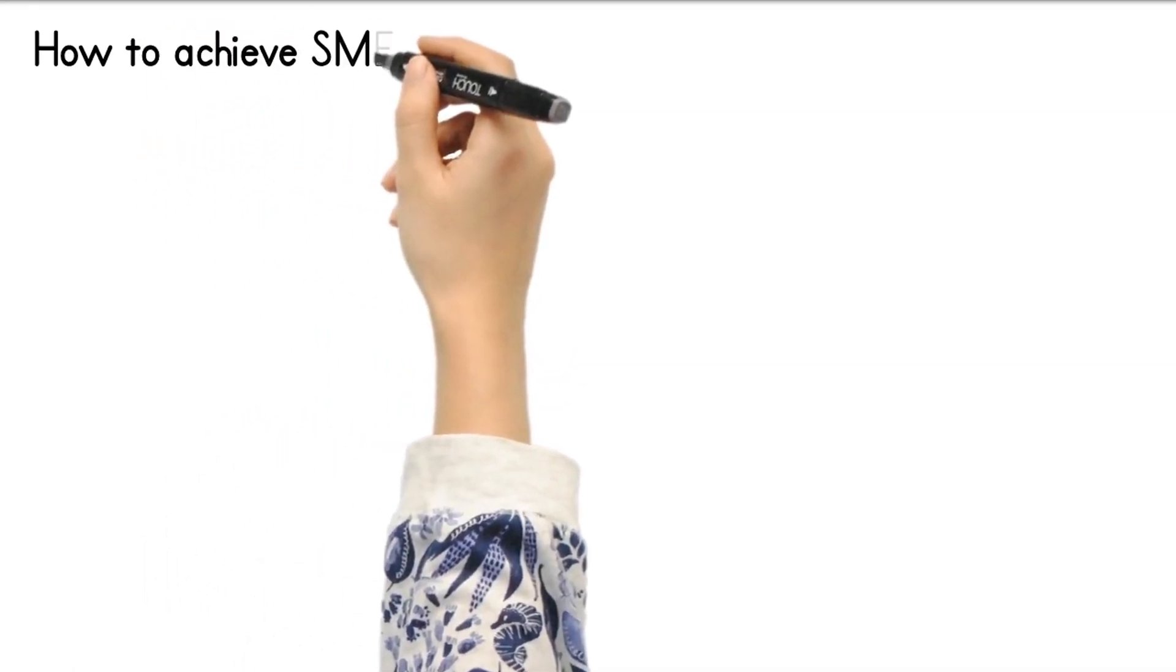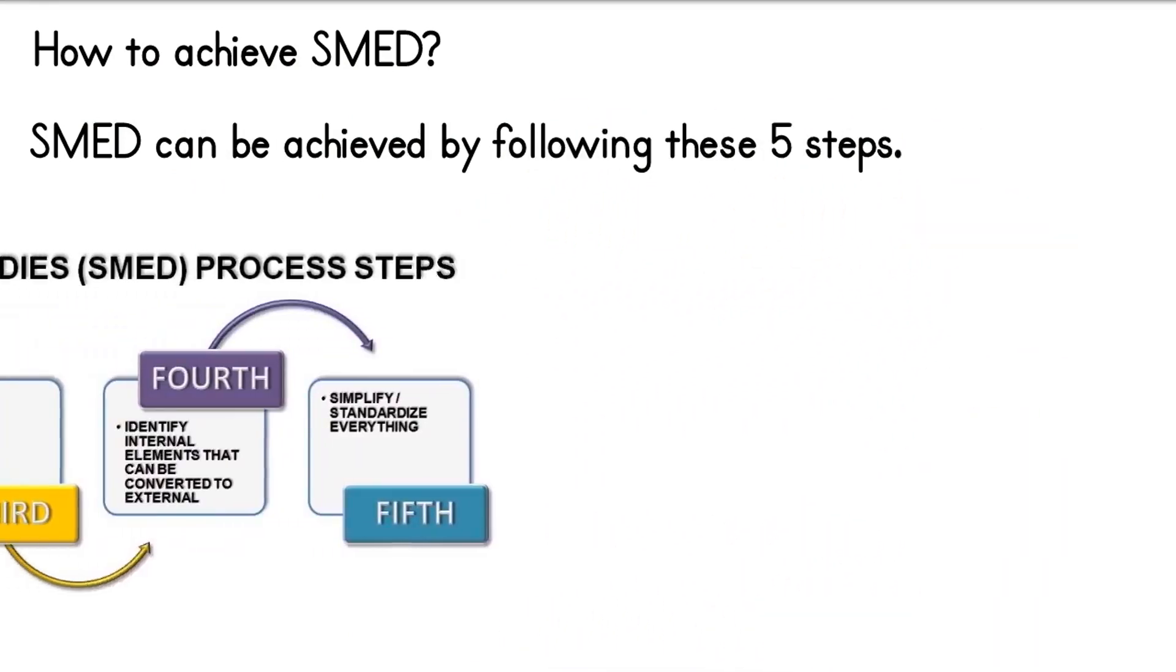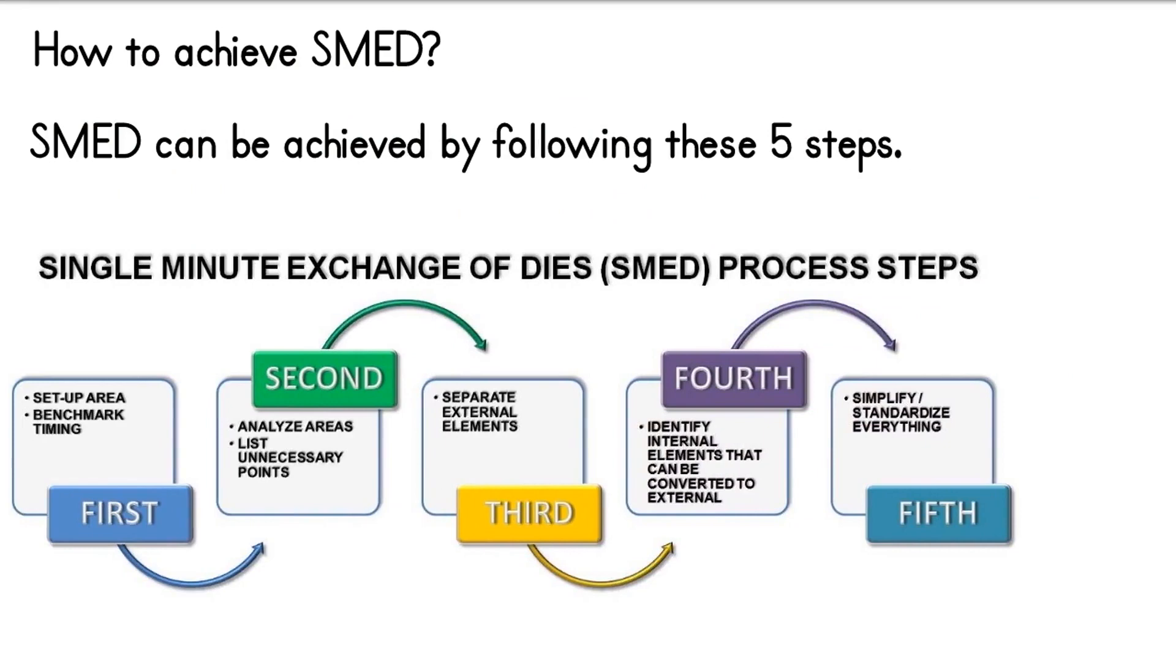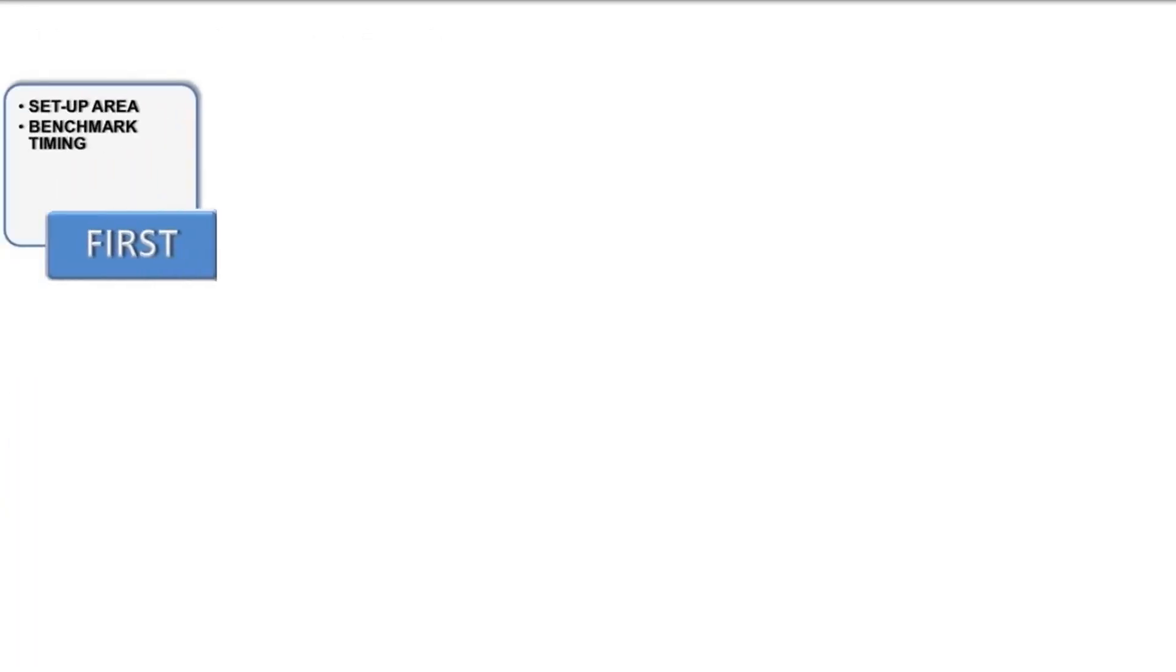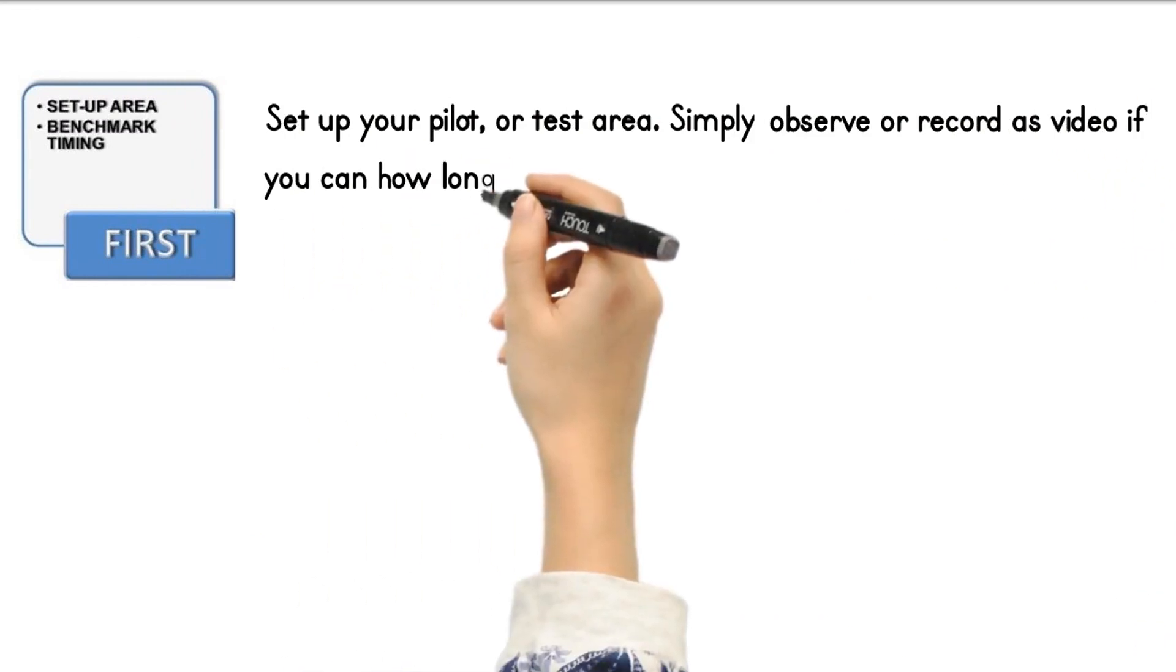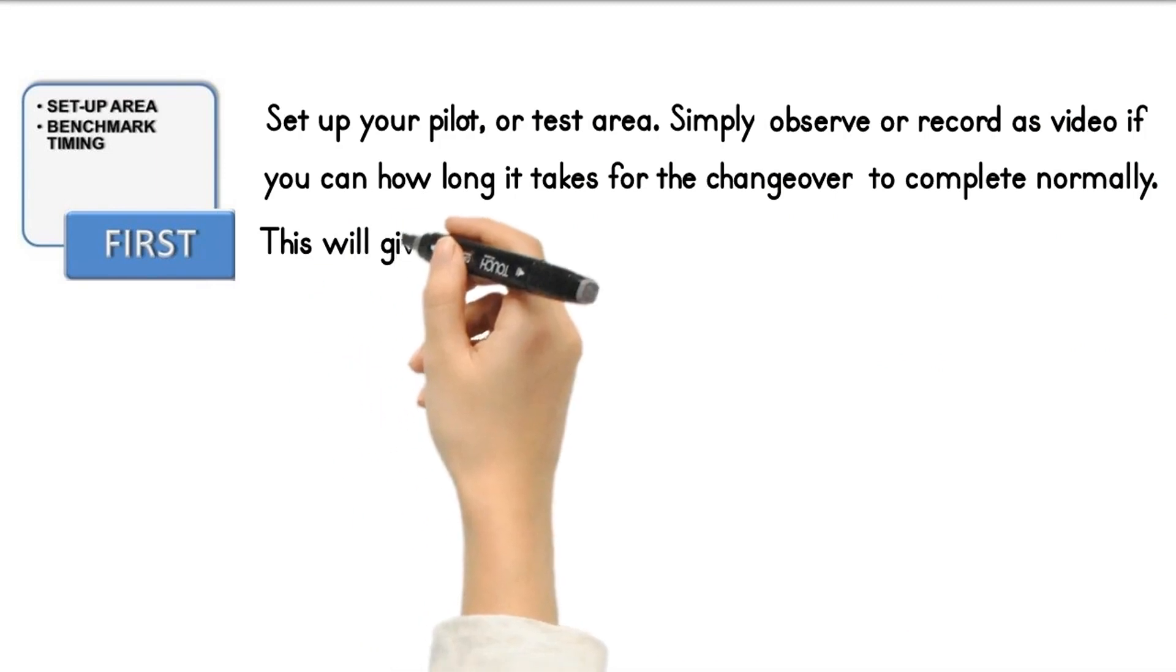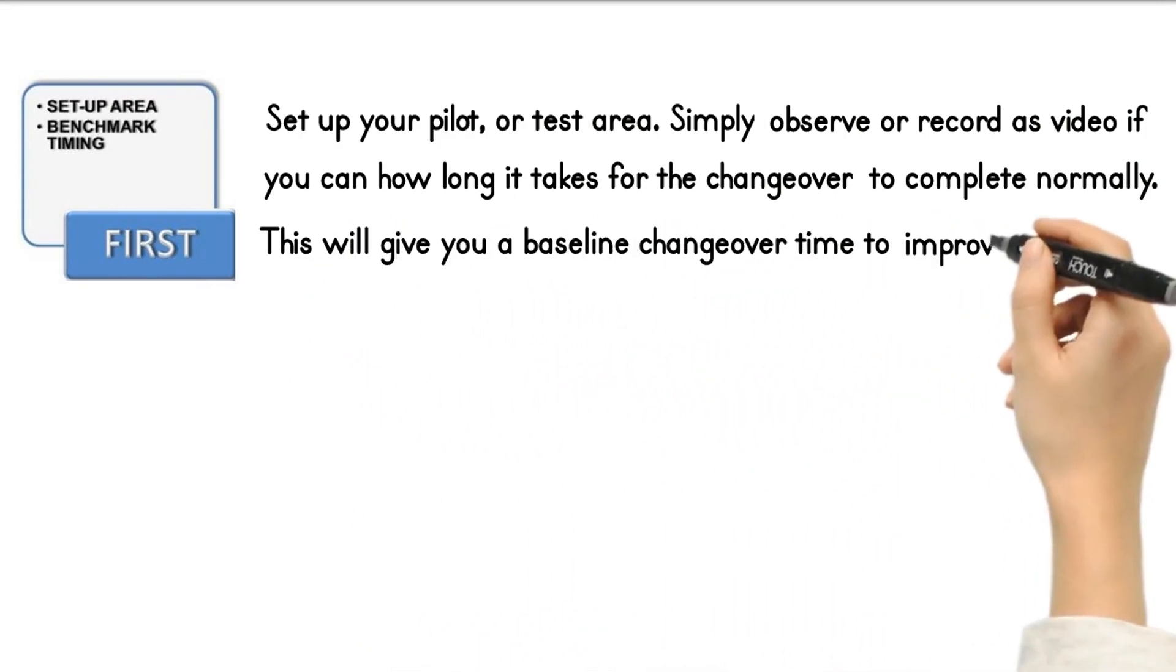How to achieve SMED? SMED can be achieved by following these five steps. First step: Set up your pilot or test area. Simply observe or record as video how long it takes for the changeover to complete normally. This will give you a baseline changeover time to improve on.